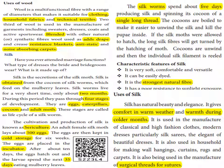Silkworms live for a very short time — only about two months. During this period, they pass through four stages of development: the egg, the caterpillar (larva), the cocoon, and the adult moth. These stages are called the life cycle of the silkworm.